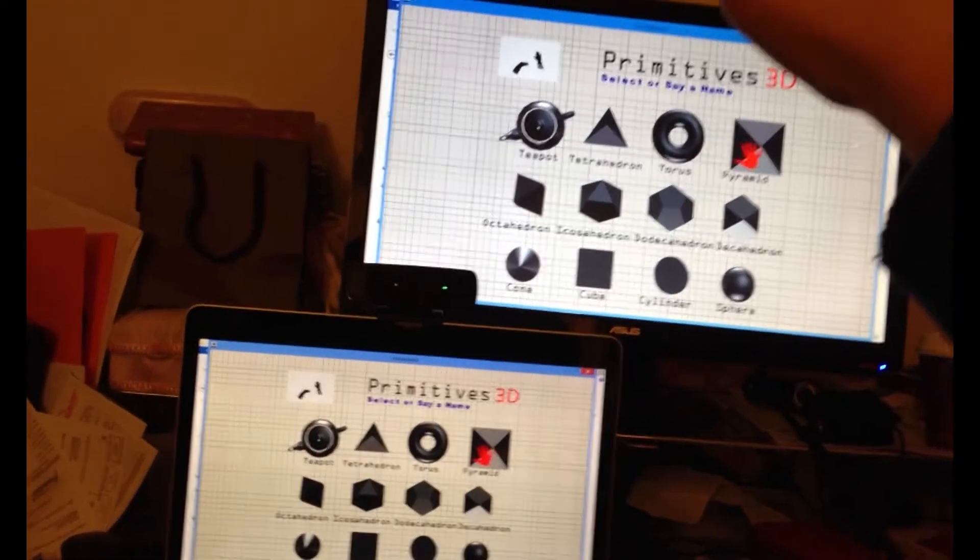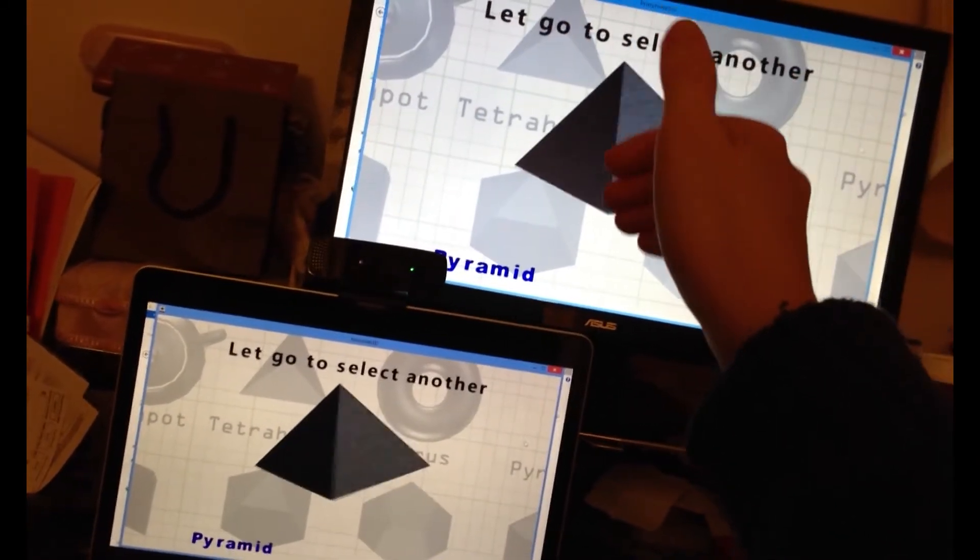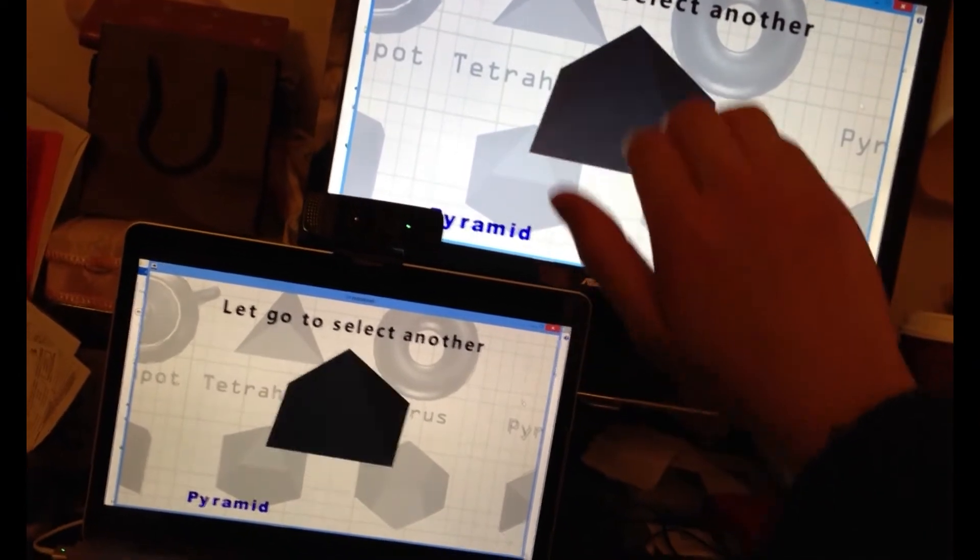Primitives 3D lets you reach into the graph paper and grab the 3D primitive you're interested in. Once you've selected the one you want to examine, you get a close-up.